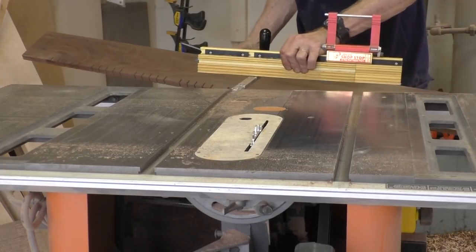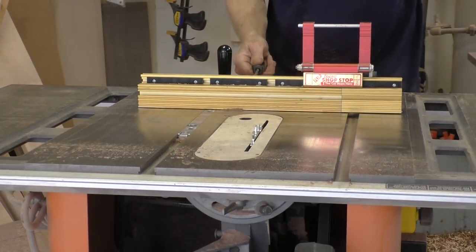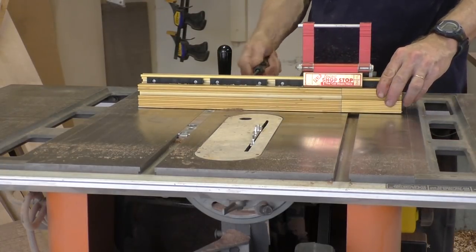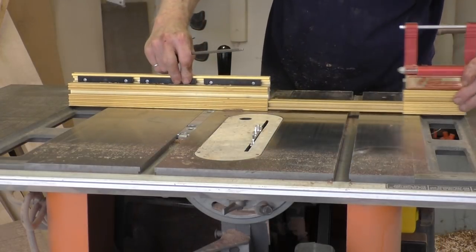When I get to about halfway across the board, I'm going to switch the miter gauge to be on the other side of the blade. And I'll just adjust it so that it's not going to run into the blade. And then I will make the remaining cuts.